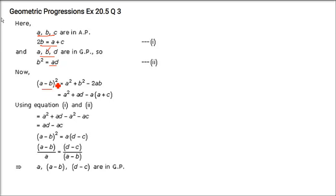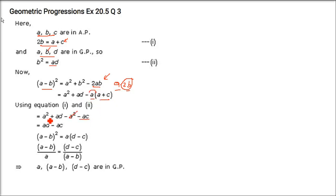Now coming to these three terms: (A−B)² = A² + B² − 2AB. In place of 2AB, we write A·2B, and in this 2B, we place A + C. So A² + AB − AC. A² gets cancelled, AD − AC will come. So (A−B)² = A(D−C).